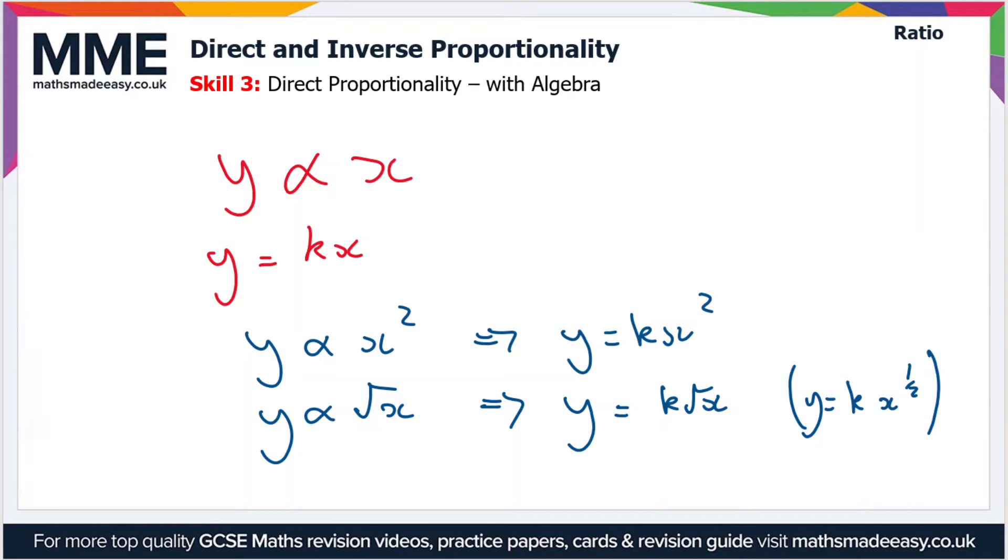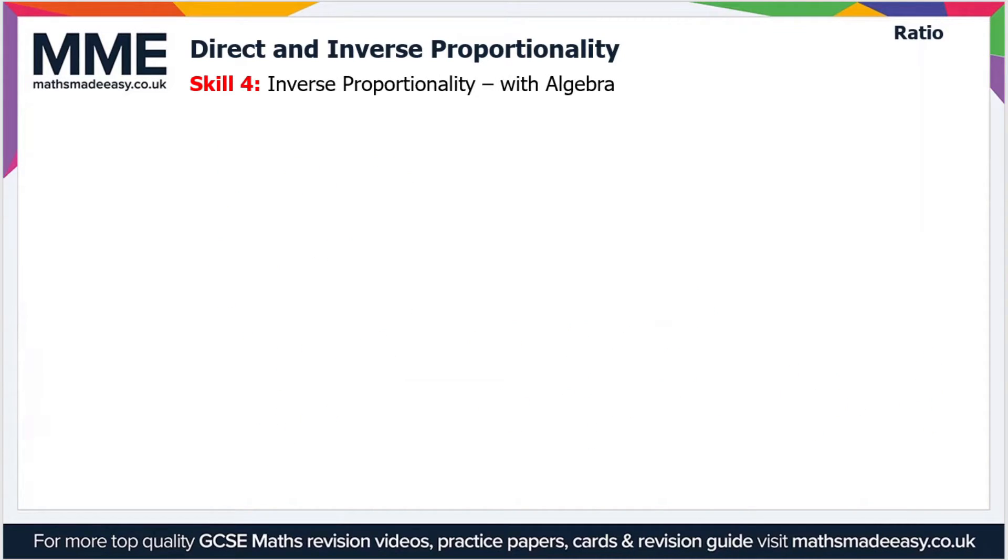That's the case for direct proportionality. What about inverse proportionality? This time we write the expression as y is proportional to 1 over x. Let's remind ourselves: in inverse proportionality, if we have two quantities y and x which are inversely proportional to one another, then as y increases, x will decrease at the same rate. So if you double y, x will halve.